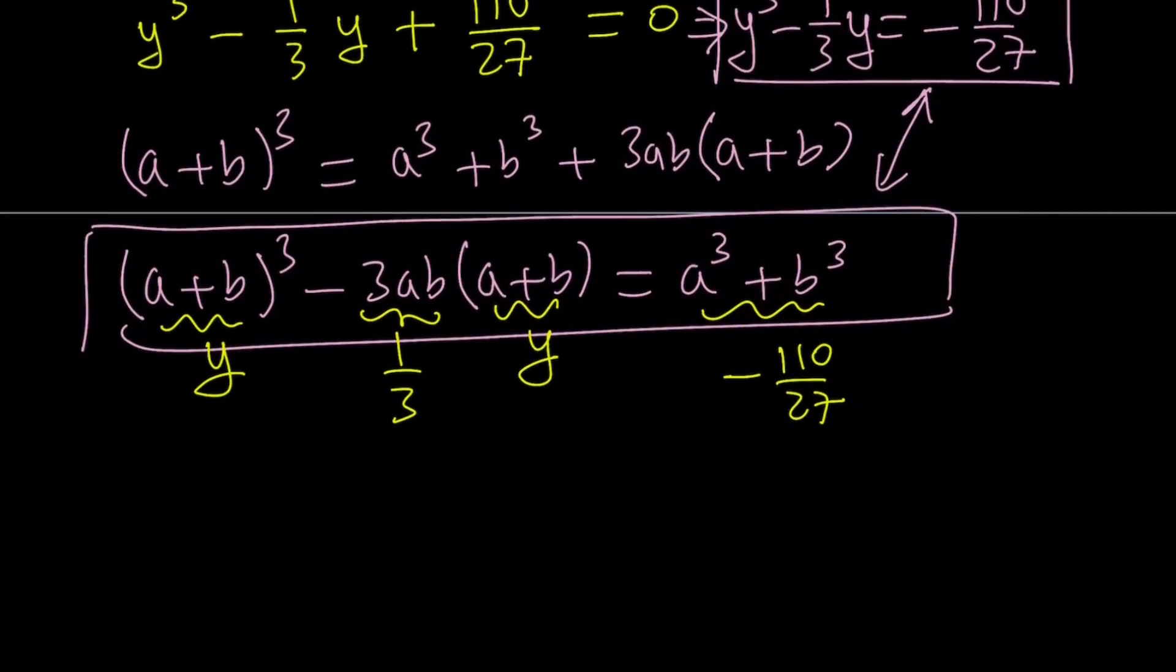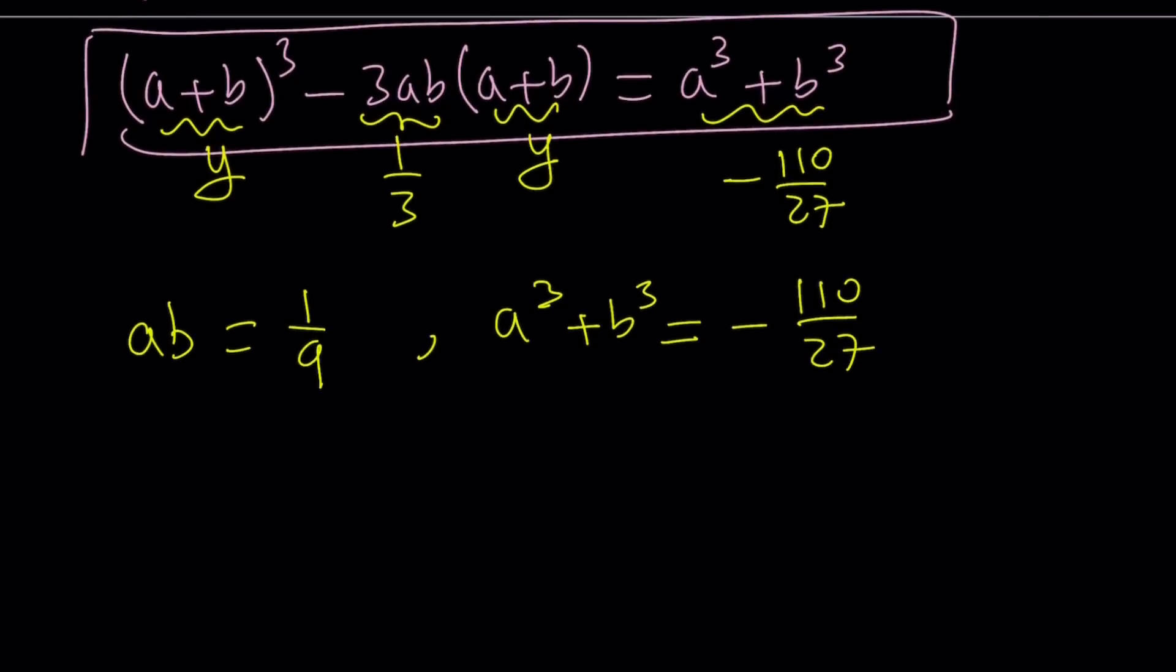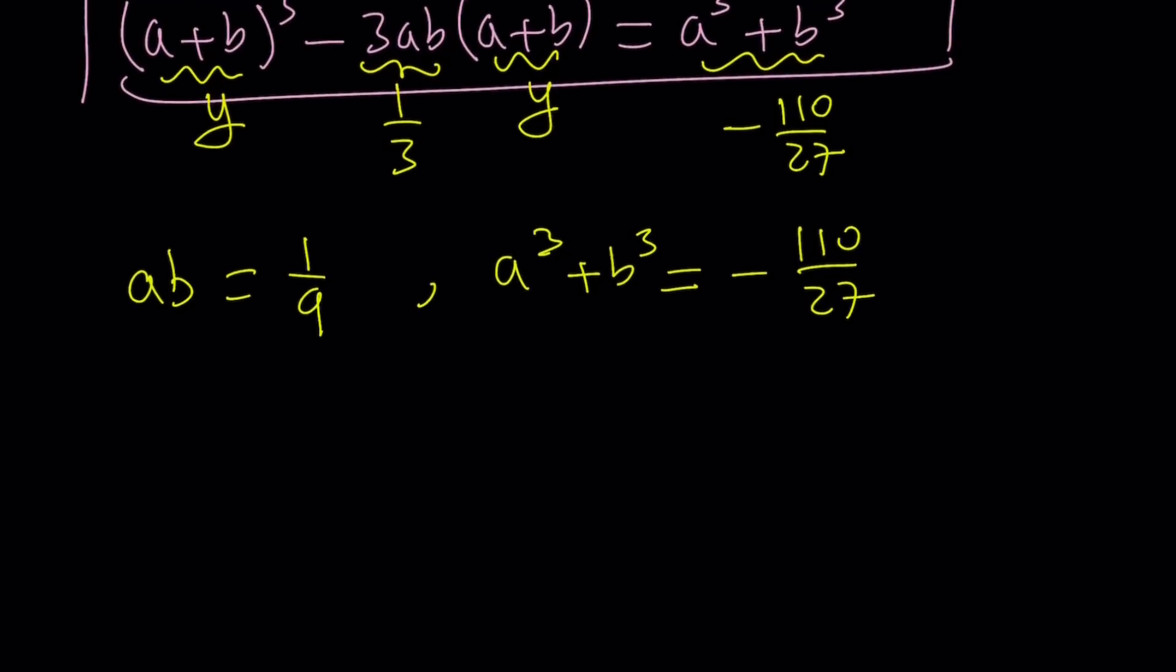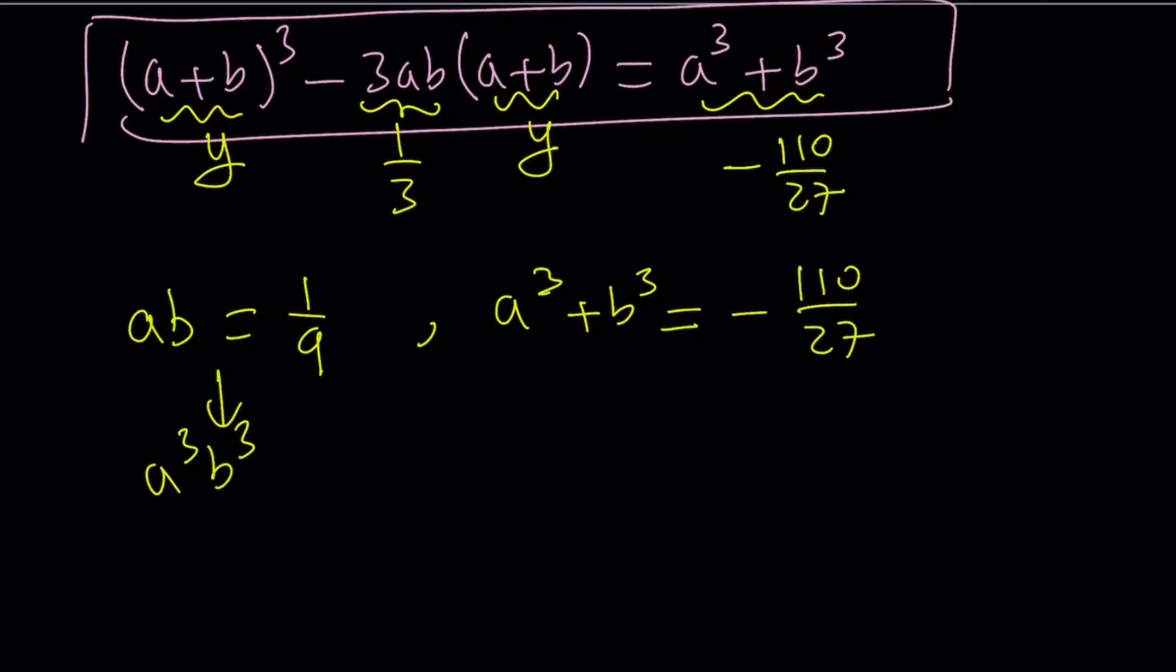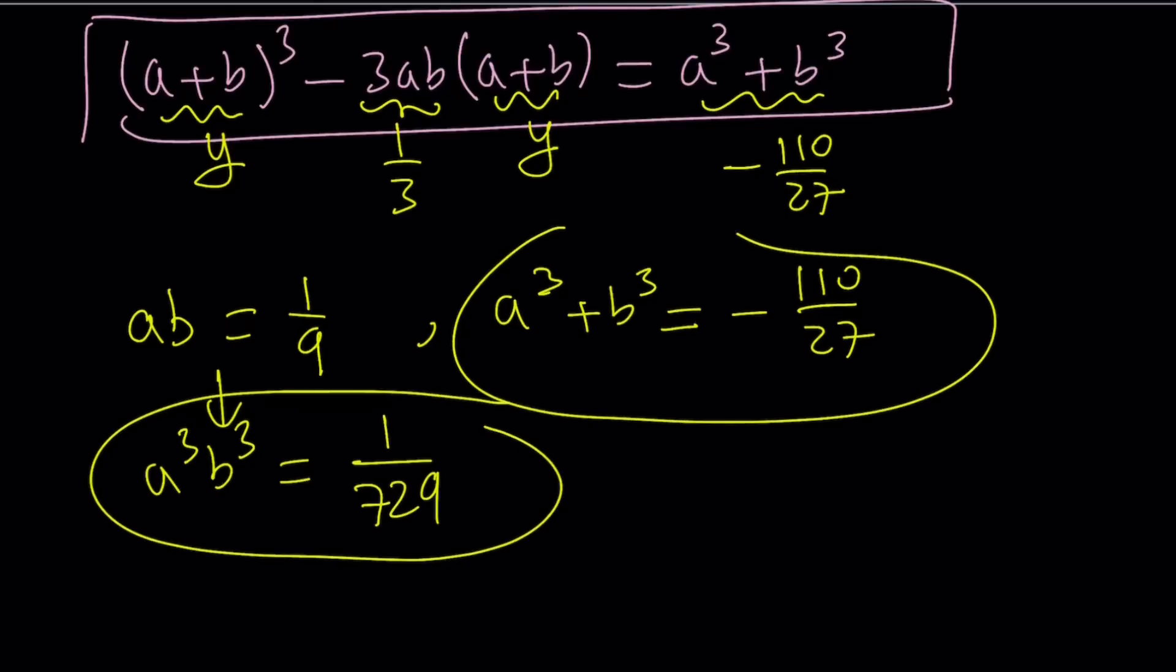From here, we can say that 3ab is equal to 1 third, which means ab is equal to 1 ninth. And a cubed plus b cubed is equal to negative 110 over 27. Don't worry, everything is going to simplify and we're going to get a nice answer. That's why we have the second method. Just bear with me. Let's cube both sides here. We get a cubed b cubed equals 1 over 729. Some people said that my handwriting is nice or it looks like their handwriting. Actually, it's not nice at all. But anyways, thank you for the compliment.